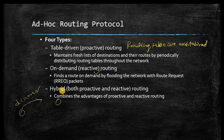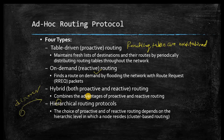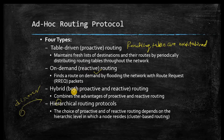Hybrid routing combines the advantages of both proactive and reactive protocols. Hierarchical routing protocol uses either proactive or reactive protocol depending on the need of the routing. To summarize: proactive keeps routing information ready; reactive searches for routing information only when required; hybrid combines the advantages of both; hierarchical makes a choice depending on the situation. In the next lecture we will study the DSDV routing protocol, which belongs to the proactive category.